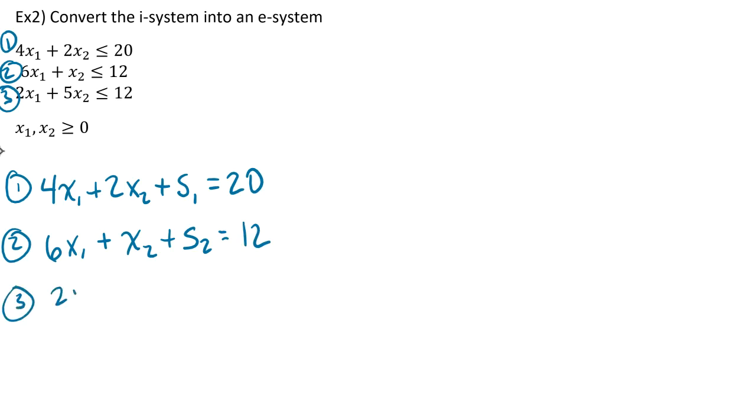Then we have a third equation, so 2x1 plus 5x2 plus, we've already used slack variables 1 and 2, so now we move on to using s3 for our third slack variable. That equals 12. Now, all of our normal variables and all of our slack variables have to be greater than or equal to 0. So for that last equation, we're just going to add in our slack variables. So we got x1, x2, s1, s2, s3, all greater than or equal to 0.